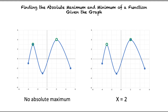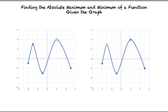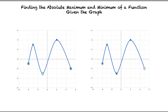We can apply similar rules when finding the absolute minimum. When finding the absolute minimum of a function, if a hole is present at the lowest point of the function, there will not be an absolute minimum. Let's take a look at the first graph. Our lowest values are at the coordinates negative 4 and negative 1, negative 1 and negative 3, and 5 and negative 2. The lowest point on the graph is located at x equals negative 1, but a hole is present, so there is not an absolute minimum.